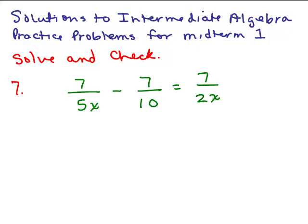This is a continuation of the solutions to the Intermediate Algebra Practice Problems for Midterm 1 at MiraCosta. We're starting with number 7 in this video. Solve and check: 7 over 5x minus 7 tenths equals 7 over 2x.